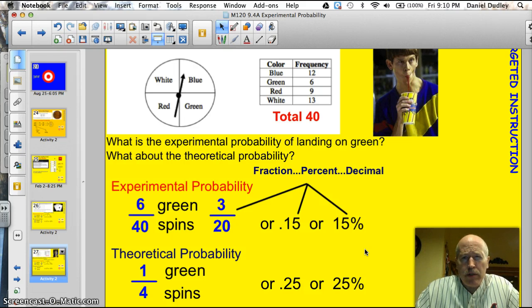All right, I've been using those terms a lot. One more time. Theoretical probability. This is the mathematical odds. One out of four times, he should spin green. Experimental probability. That's what actually happens when you do the experiment, or perform the experiment.